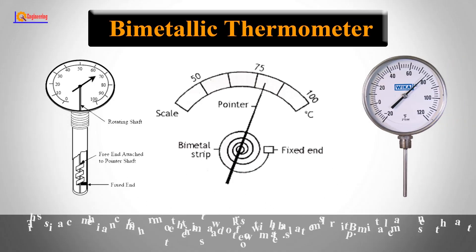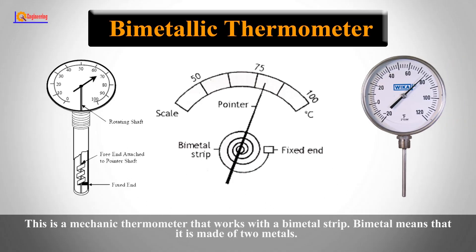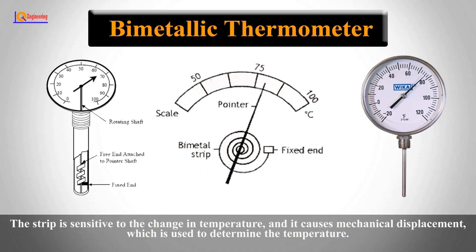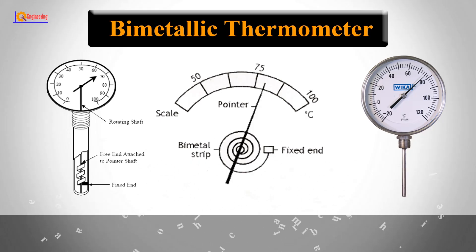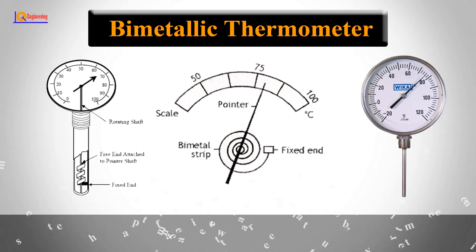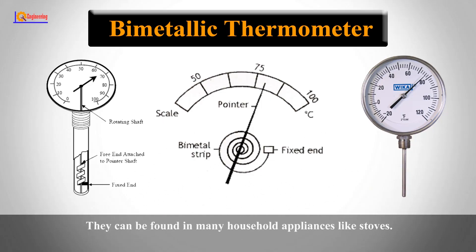Bimetallic thermometer. This is a mechanical thermometer that works with a bimetal strip. Bimetal means that it is made of two metals. The strip is sensitive to changes in temperature and causes mechanical displacement, which is used to determine the temperature. These thermometers are perfect for higher temperatures, as they become less sensitive and accurate at lower temperatures.